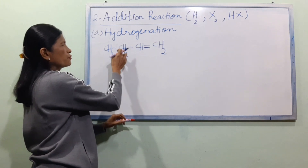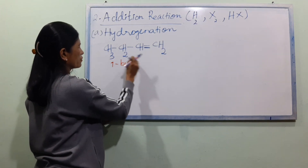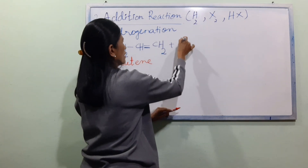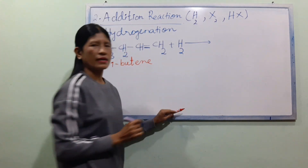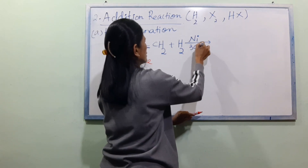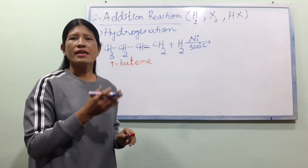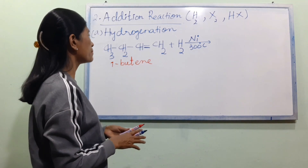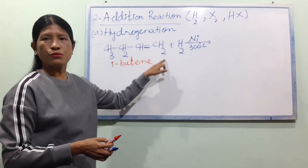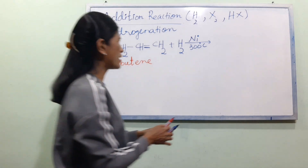If you want to number carbons 1, 2, 3, 4 — we will choose carbon 2. When you use the heat condition, you can see H2 here. In this case, you can see 300 degrees Celsius.